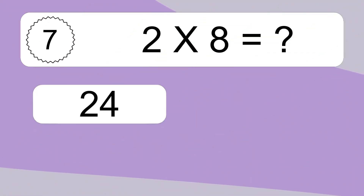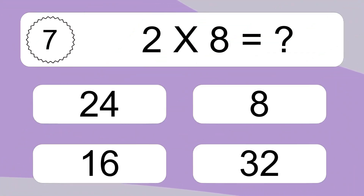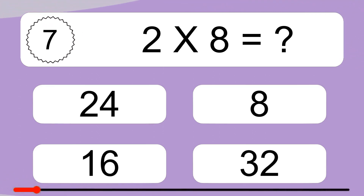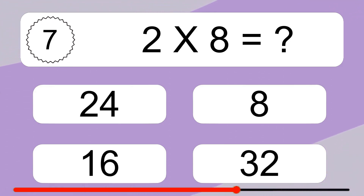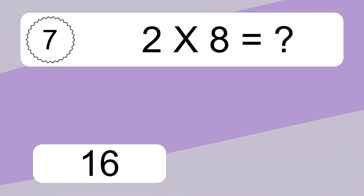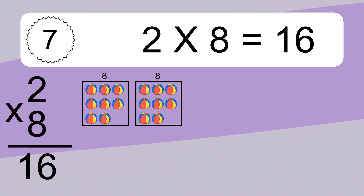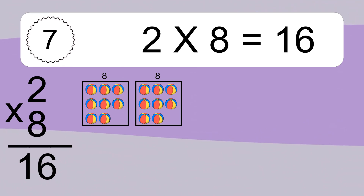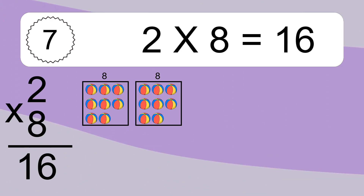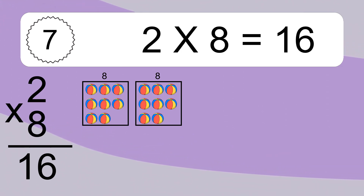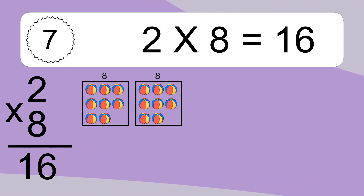2 times 8 equals what? 2 times 8 equals 16. We have 2 boxes, and each box has 8 colorful balls inside. If you count all the balls in all the boxes together, you will have 2 times 8 balls. This equals 16 balls.